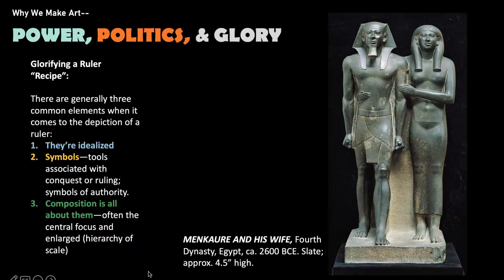You might remember, as we were talking about the depiction of Egyptian pharaohs among the many examples I've already discussed, when it comes to power, politics, and glory, glorifying a ruler involves the following recipe: they're often idealized, sometimes there are symbols associated with them, perhaps tools that represent their supreme authority, perhaps weapons of conquest and war, and the composition usually is all about them. And what we'll see in today's mini lecture is the implementation of a central focus and hierarchy of scale.